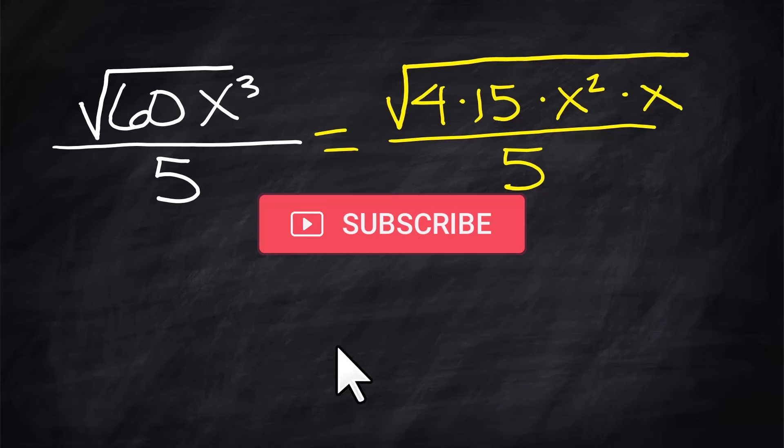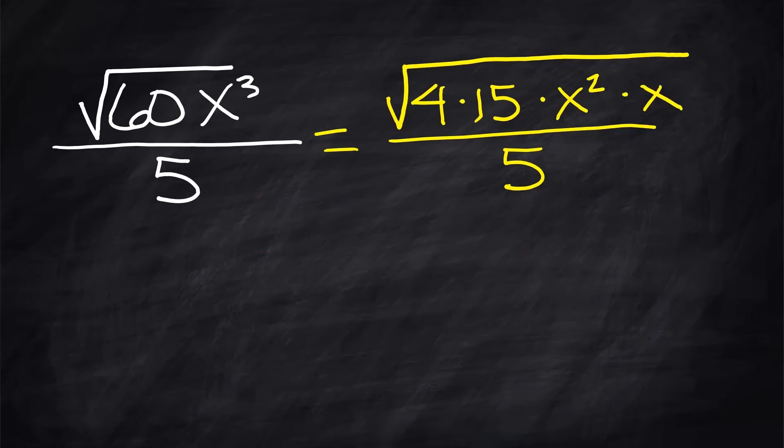But the top, there's perfect squares buried in there. One of the perfect squares in a 60 is 4, so 4 times 15 is 60. And then that x cubed is actually x squared times x. So I'm going to rewrite all this, and I'm going to put those perfect squares up in front.